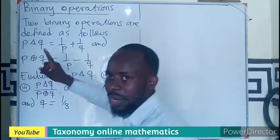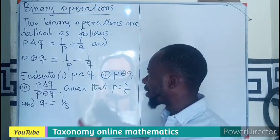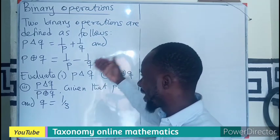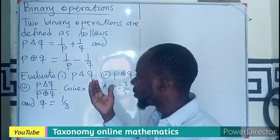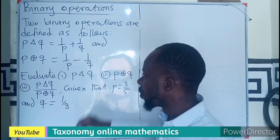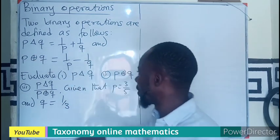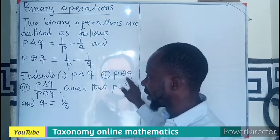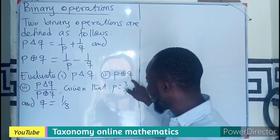P triangle Q is given as 1 over P plus 1 over Q, then P plus in a circle Q will give 1 over P minus 1 over Q. So we have to evaluate this expression, this expression, and the first one over the second one if P is taking a value of 3 over 5 and Q is 1 over 3.